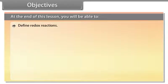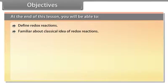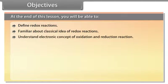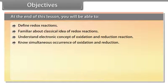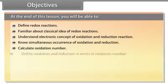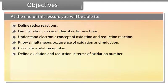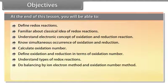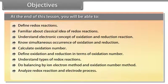Objectives: At the end of this lesson, you will be able to define redox reactions, be familiar with the classical idea of redox reactions, understand the electronic concept of oxidation and reduction reactions, know the simultaneous occurrence of oxidation and reduction, calculate oxidation number, define oxidation and reduction in terms of oxidation number, understand types of redox reactions, do balancing by ion-electron method and oxidation number method, and analyze redox reactions and electrode processes, and define electrochemical cell.